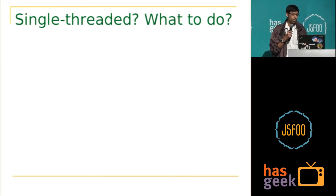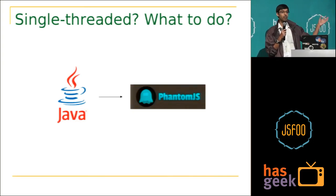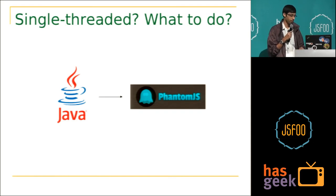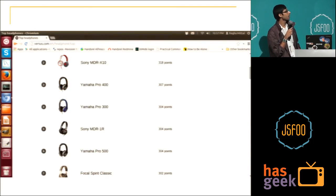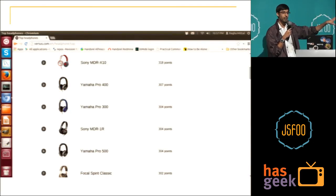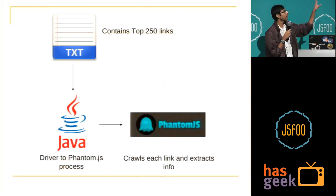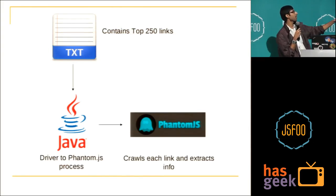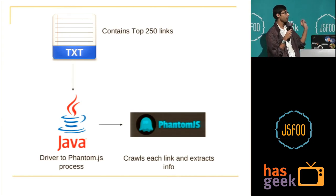So what should I do? I come from the Java world, so what I did was I wrote a Java class which was driving PhantomJS. I basically wrote a PhantomJS process which extracted all these links in one shot. So this is how it sort of looks like. I had a text file which contains all my top-50 links, and my Java class was reading each of these links and then driving PhantomJS, giving the links to PhantomJS so that it crawls each link and finds out the pricing info and other things.